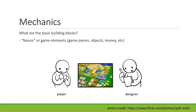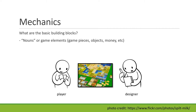Category number two are actions — what are the things that those objects do? Because they would be rather useless if they couldn't do anything. We can think of them as verbs: attacking, collecting, picking up. They don't have to be single verbs; they can be more complex things, such as 'equip my unit with this weapon.' We will talk about more examples in just a little bit.